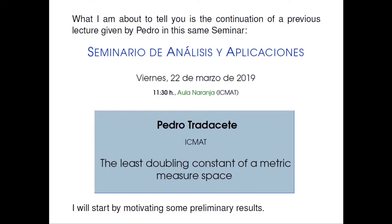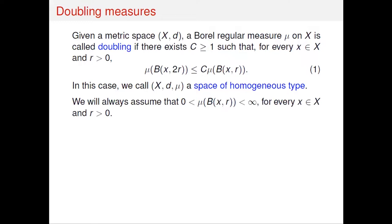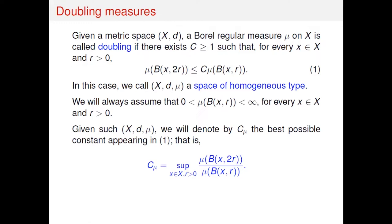We have a general metric space. The metric D is fixed on X. We consider all doubling measures — measures satisfying the standard inequality. We assume both sets are measurable with respect to mu, and have finite and positive measures. The space satisfies the inequality that the measure of the ball of radius 2r is bounded by a constant, uniformly in r, times the measure of the ball of radius r. That's what we call a doubling measure, and the space (X, D, mu) is called a space of homogeneous type.